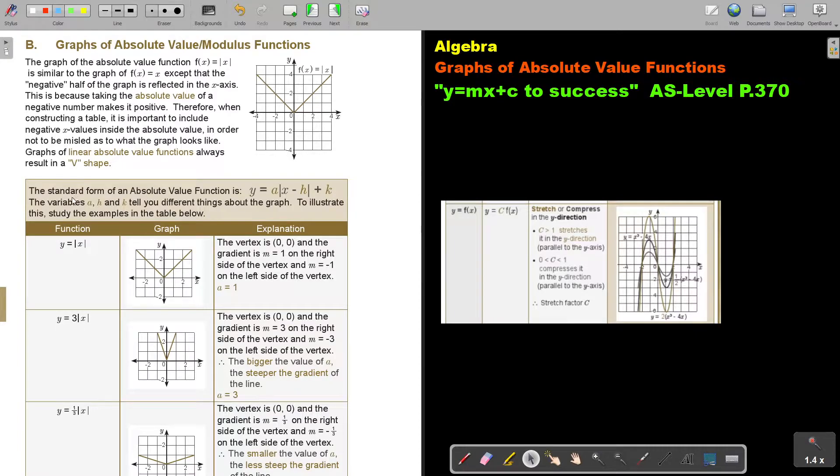The standard form of an absolute value function is this. The variables a, h, and k tell you different things about the graph. To illustrate this, study the examples in the table below.